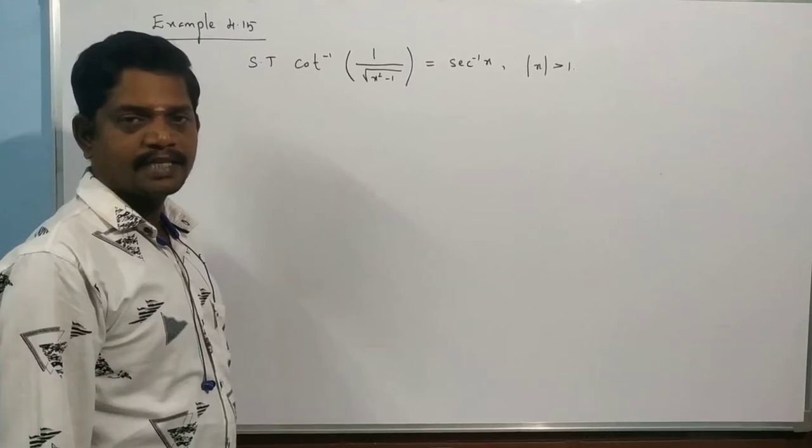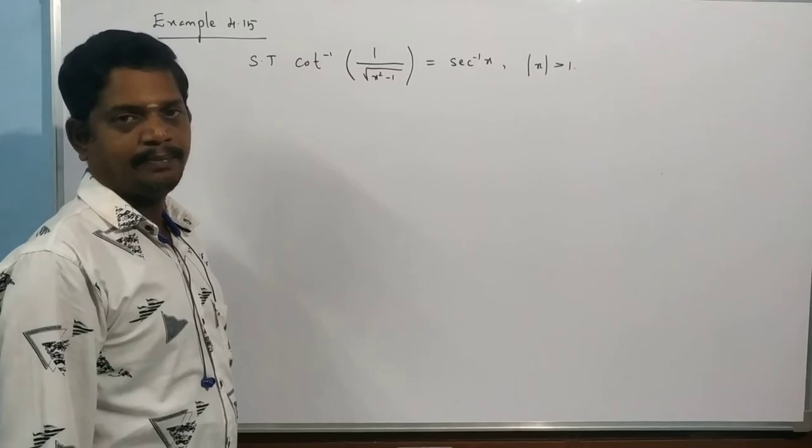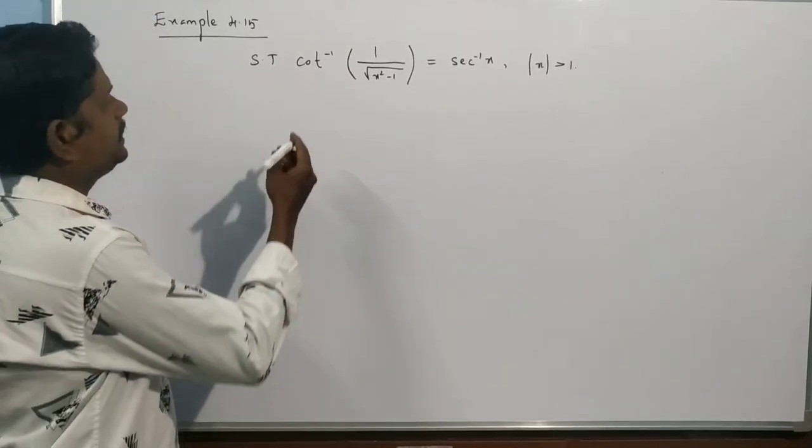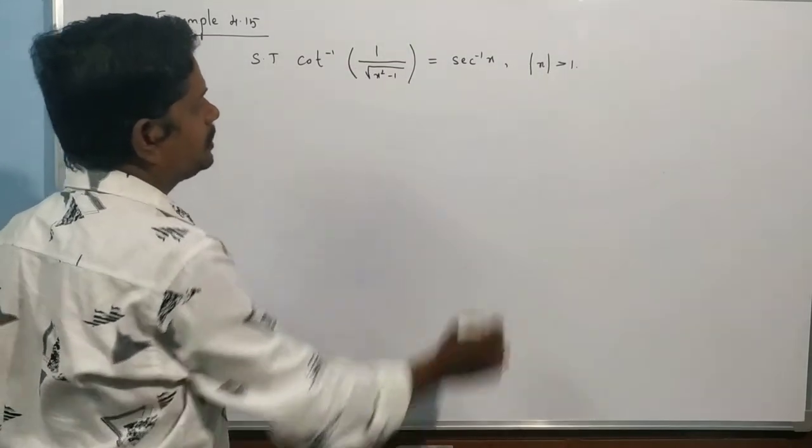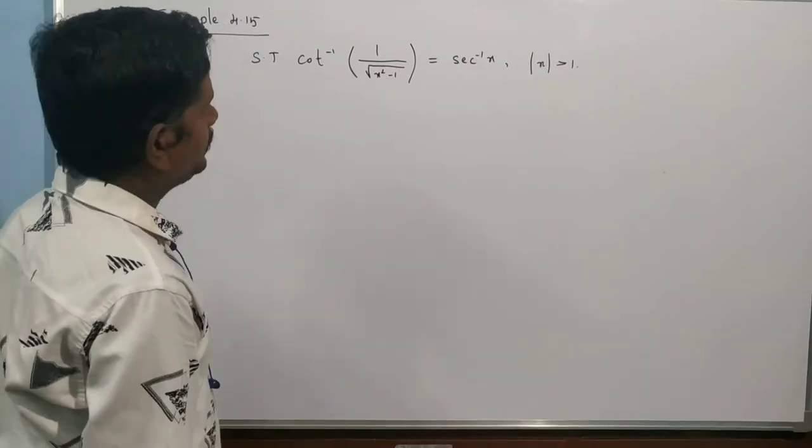Hi students, welcome to SST Mathematics. Today, 12th semester Mathematics Club Chapter 4. Example number 4.15. Show that cot inverse of 1 by root of x square minus 1 equal to sec inverse x, mod x equal to greater than 1.